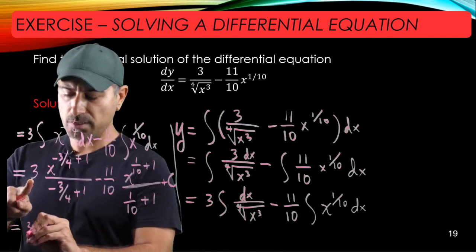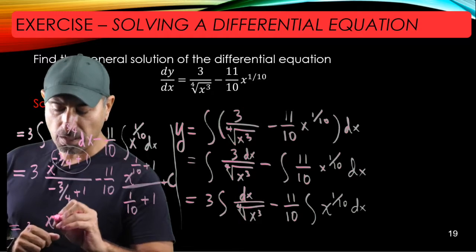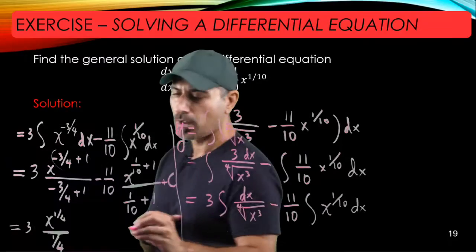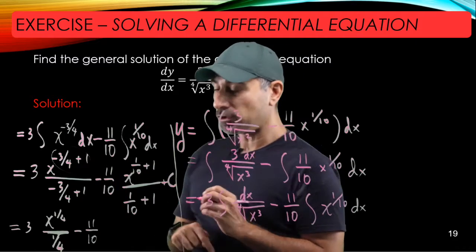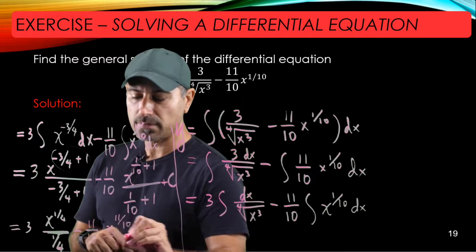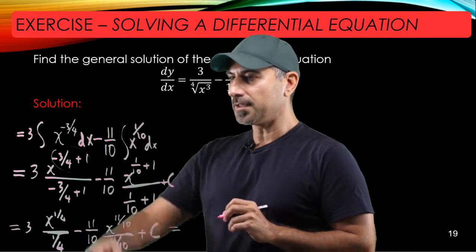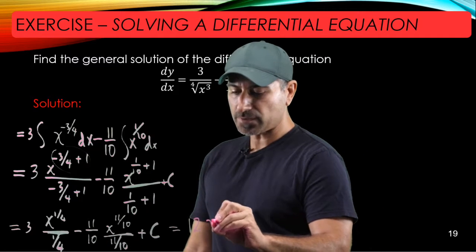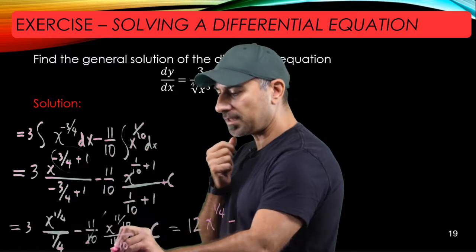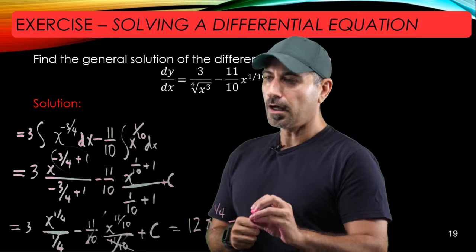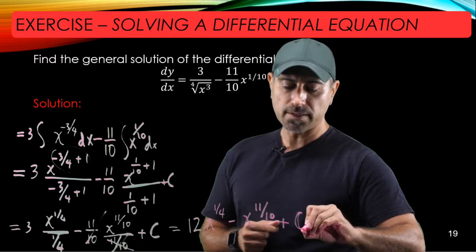Now we simplify. The first exponent: negative 3/4 plus 1 is just 1/4, so we have x^(1/4) divided by 1/4, minus 11/10 times x^(11/10) divided by 11/10. Dividing by 1/4 is the same as multiplying by 4, so 3 times 4 gives 12x^(1/4). For the second term, the 11/10 constants cancel, leaving just x^(11/10).